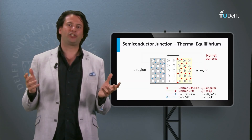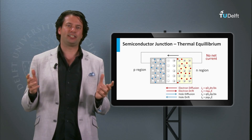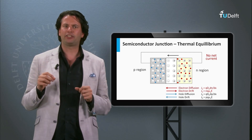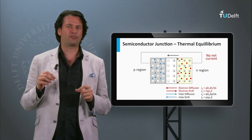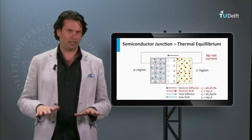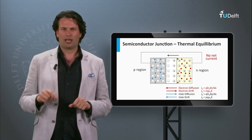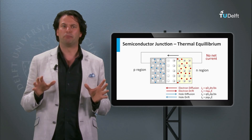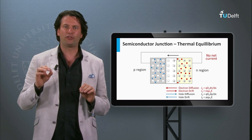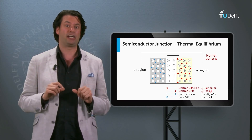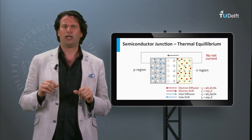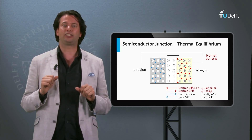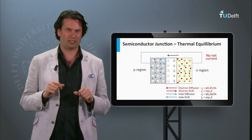We have discussed a p-n junction in the dark in thermal equilibrium. In this situation the diffusion and drift over the depletion zone are in balance. Now we are going to disturb the equilibrium by applying a bias voltage or shining light on the p-n junction. We will see that an illuminated p-n junction acts like a solar cell.